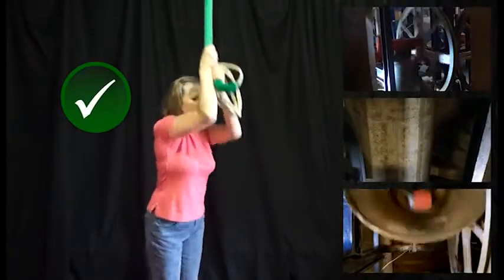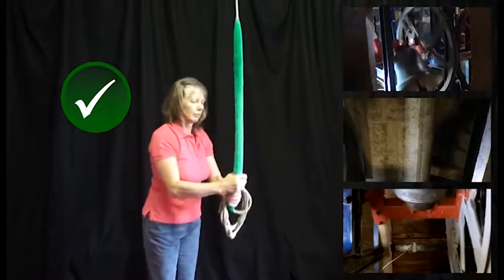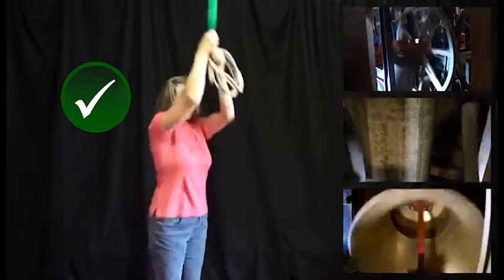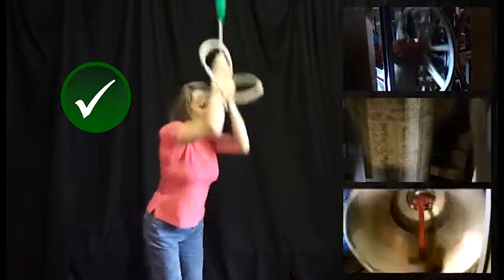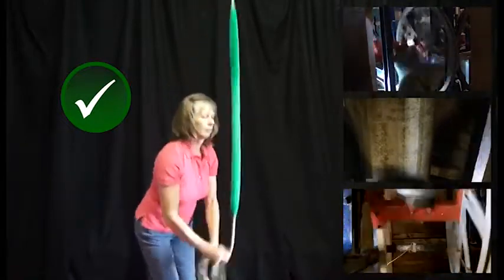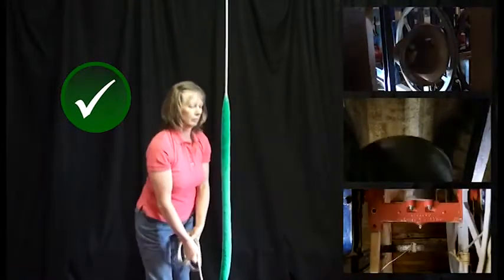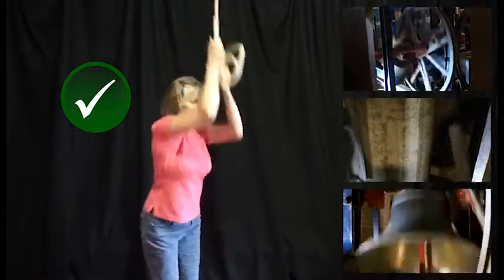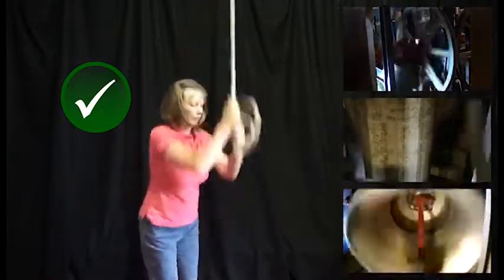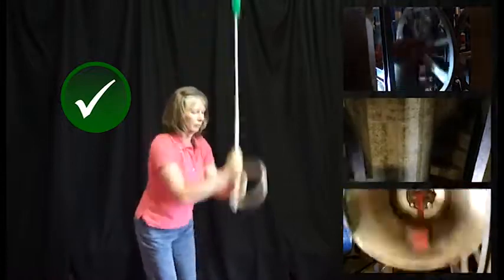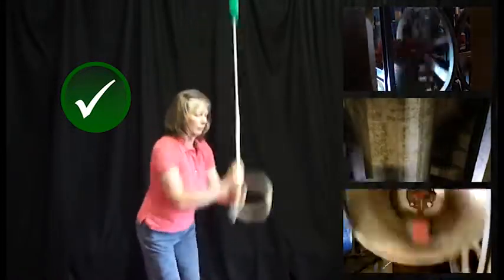So when you start to ring a bell up, the bell moves through a very small arc and starts to chime as the clapper hits the bell on one side. Gradually the arc increases, and you'll see that the clapper begins to hit both sides of the bell. It's now doubling, and that happens about a third of the way up.